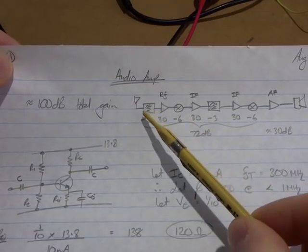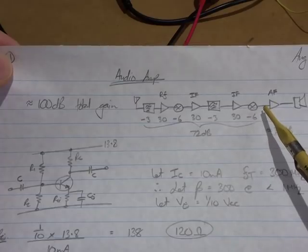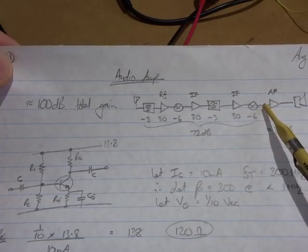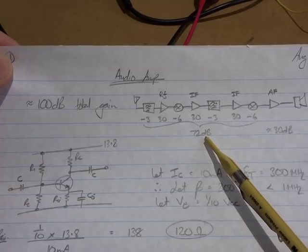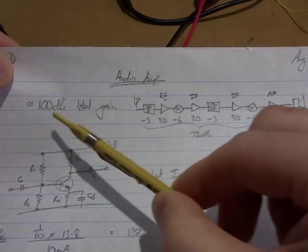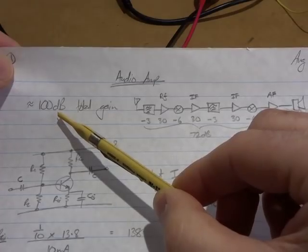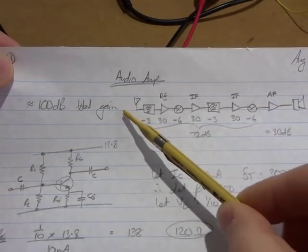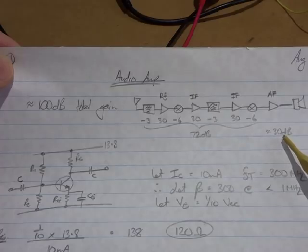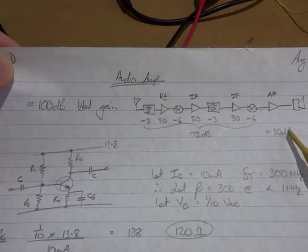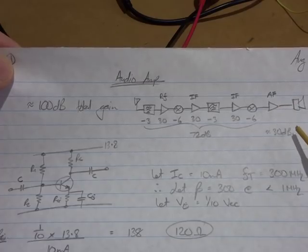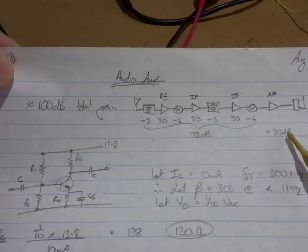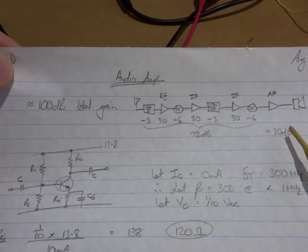Assumptions being that the preceding stages leading up to and including the product detector will give me around 70 odd dB. And noting that we want to have roughly 100 dB gain overall, then I'm going to have 30 odd dB being assigned to the audio frequency amplifier stage. So anything greater than 30 dB is what I'm aiming for.